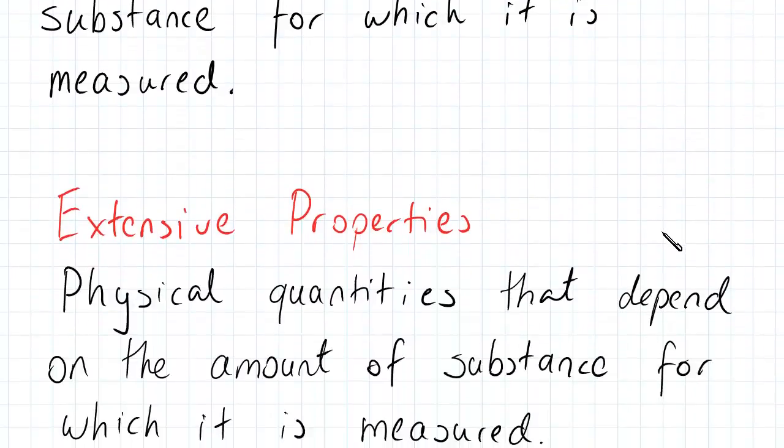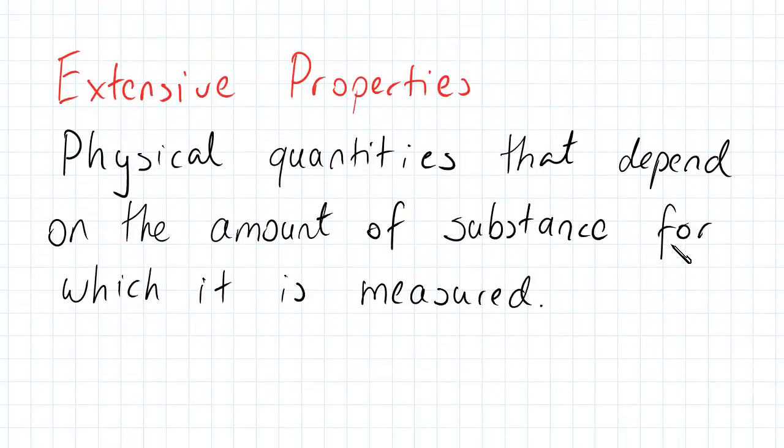And likewise, for extensive properties, due to the fact that it is an antonym of intensive properties, an extensive property is a physical quantity that does depend on the amount of substance for which it is measured.